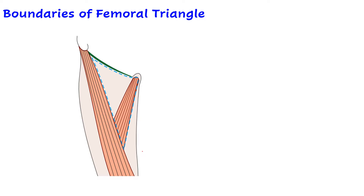Next are the boundaries of the femoral triangle. As the name suggests, being a triangle, it will have three sides - a base, an apex, and two sides. The base is formed by the inguinal ligament, which is the folded aponeurosis of the external oblique muscle of the anterior abdominal wall. It stretches between the anterior superior iliac spine of the hip bone and the pubic tubercle of the same bone.